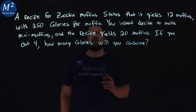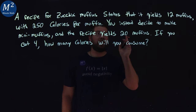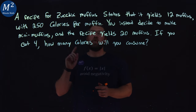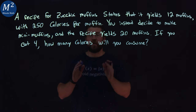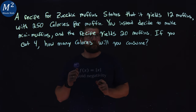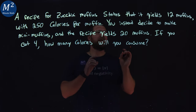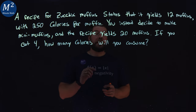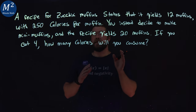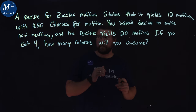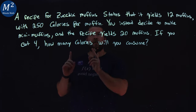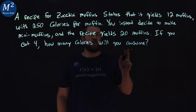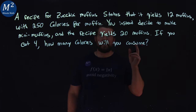A recipe for zucchini muffins states that it yields 12 muffins with 250 calories per muffin. You instead decide to make mini muffins. The recipe yields 20 mini muffins. If you eat four of those mini muffins, how many calories will you consume?